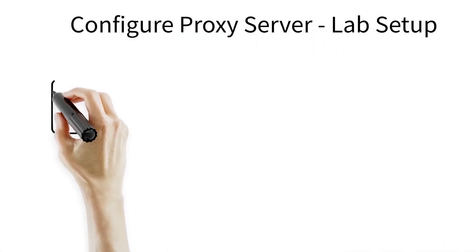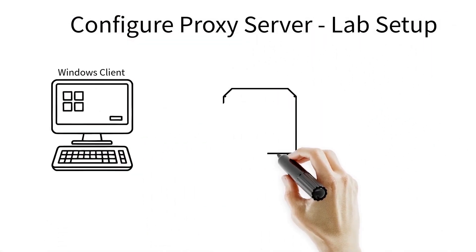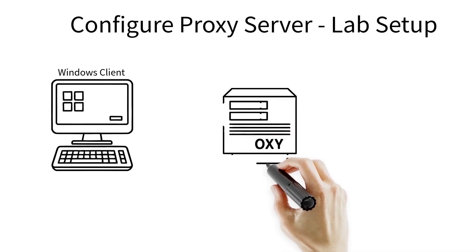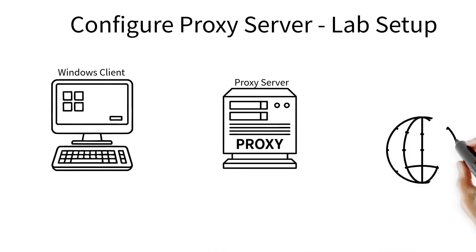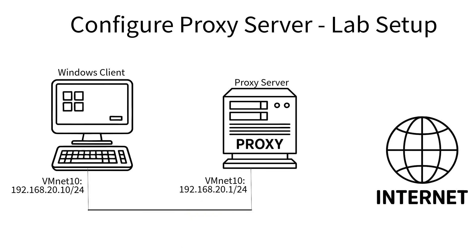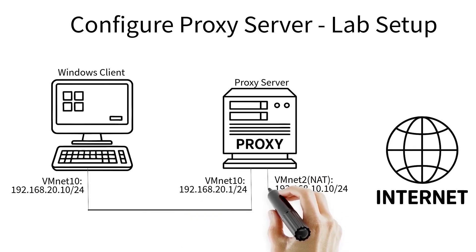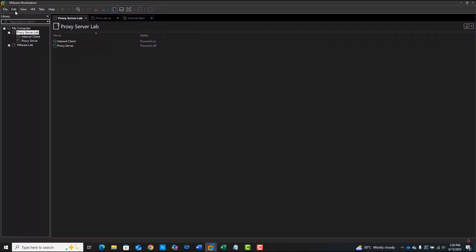First, we prepare the lab. This is my lab setup diagram. I've got one Ubuntu server which will act as our proxy, and one Windows Server 2022 which has no direct internet access. Let's start by creating the virtual networks.